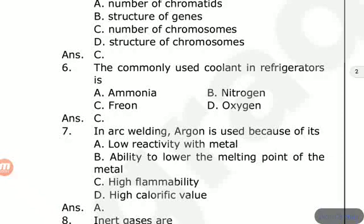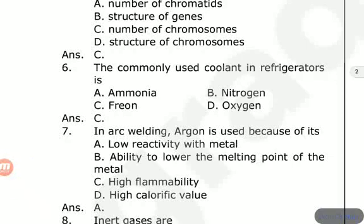Argon is a noble gas. The inert gases — neon, argon, krypton — are also called noble gases. These inert gases are chemically unreactive, which is why they are used in arc welding and other applications. They are called inert or noble gases.